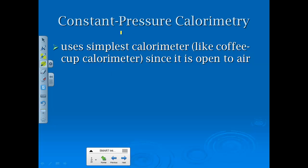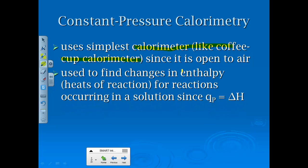If we have constant pressure calorimetry, and we'll see some of these in lab, this uses a very simpler calorimeter, which is essentially a coffee cup or a styrofoam cup measuring a temperature difference because it's open to air. And since it's open to the air, we refer to that as the constant pressure. It's used to find changes in enthalpy, or what are referred to as heats of reaction, particularly for reactions occurring in solution.